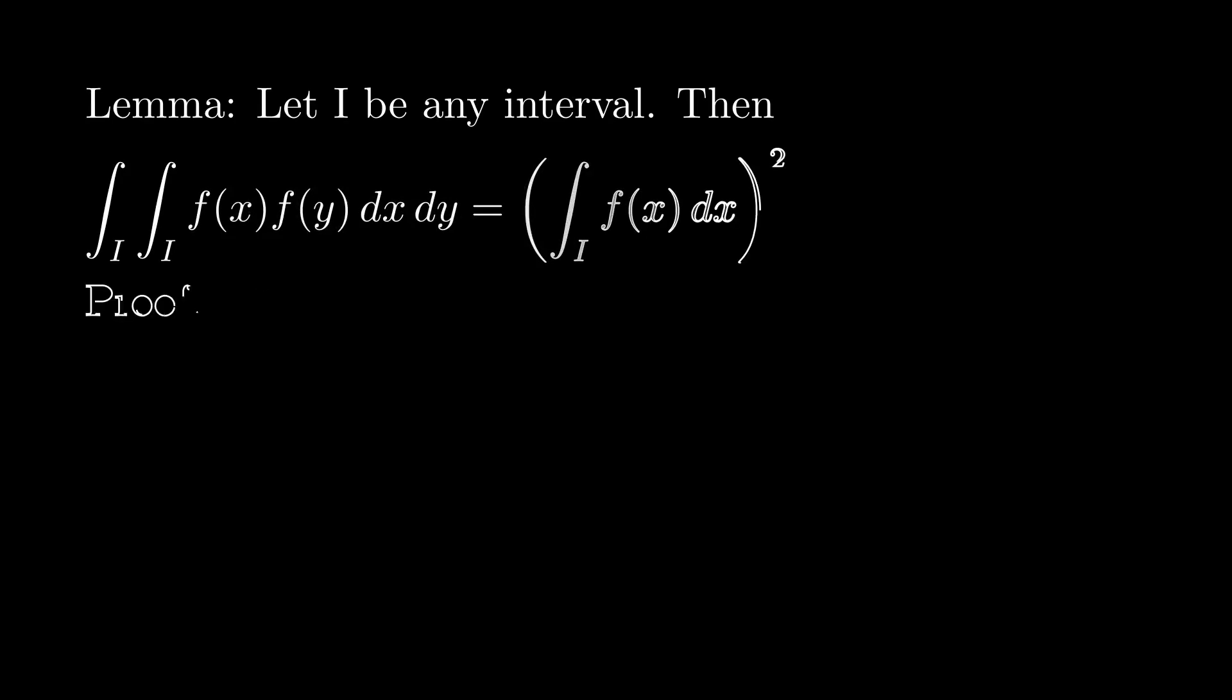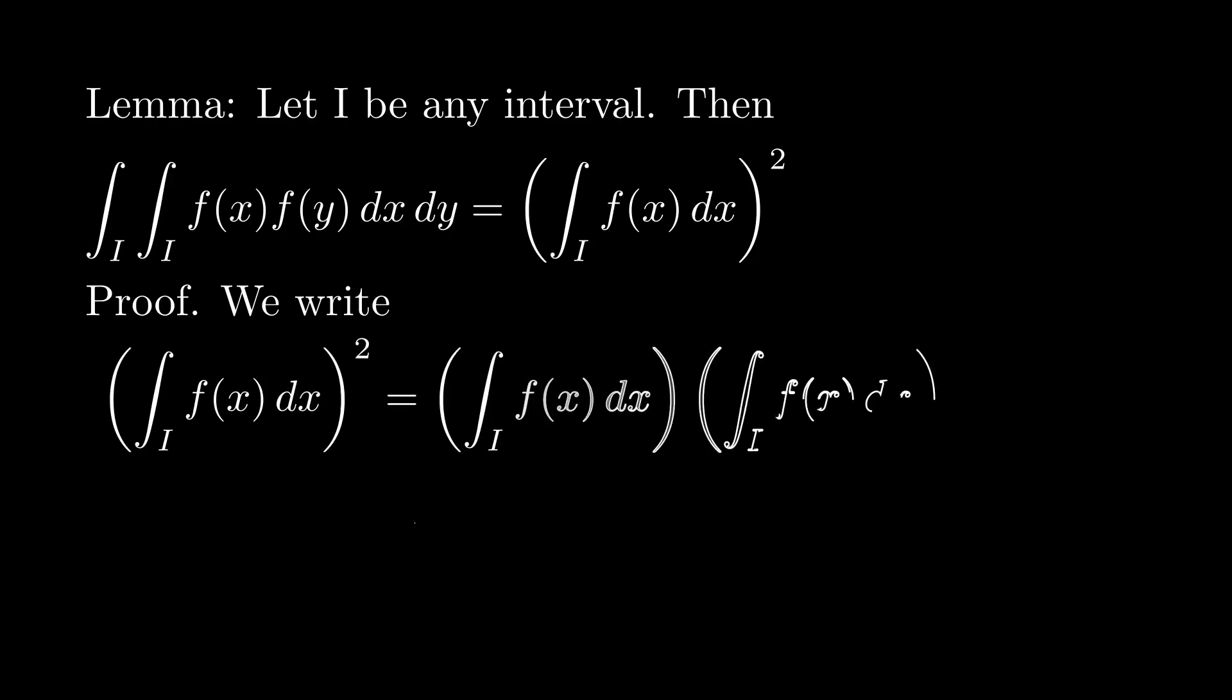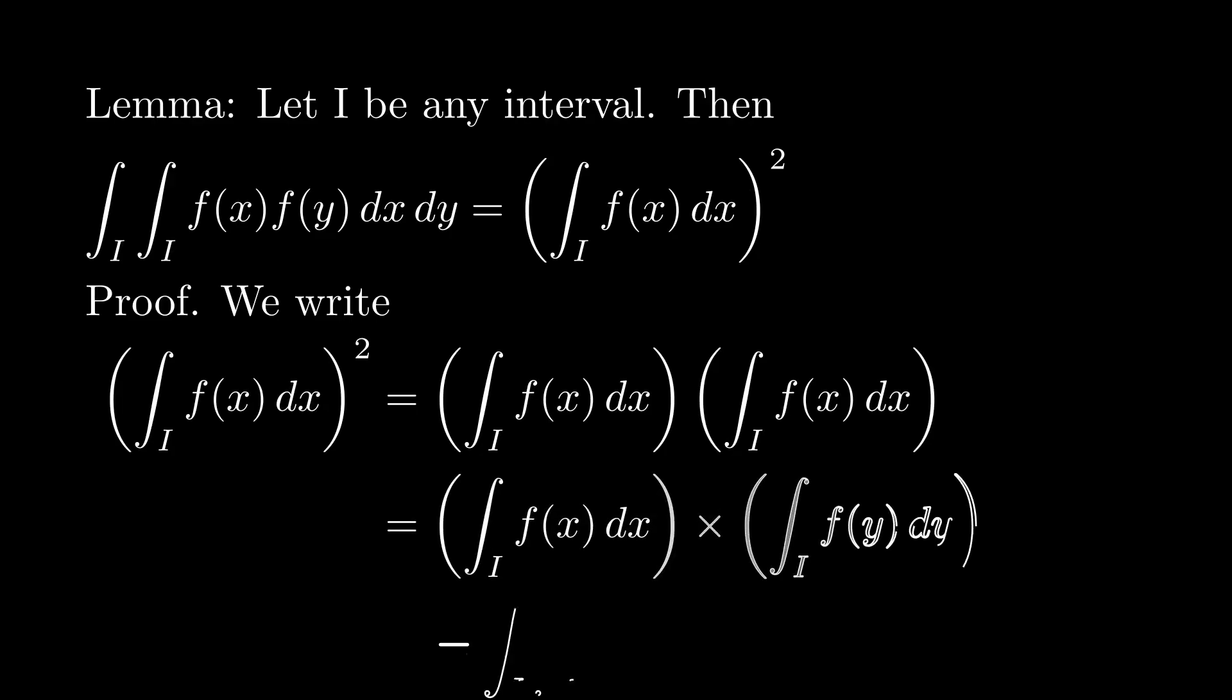Okay, and to see how this works, notice that if we look at the proof, if we square an integral, well, that's just writing the integral twice. Notice the first integral is f of x dx, the second integral is also f of x dx, but of course x here is a dummy variable. We can switch x to y. When we switch x to y, we now have two integrals, one over dx, one over dy, and then we can just recombine them. The dx's and dy's pass through each other.